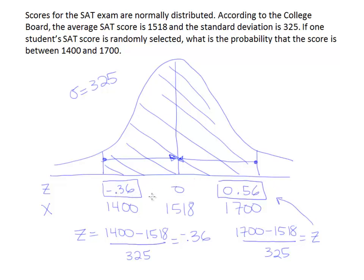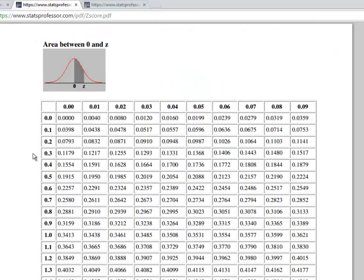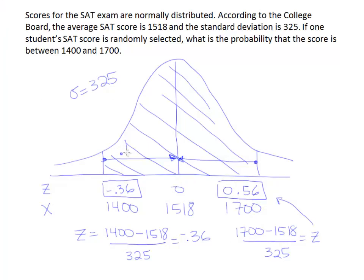So I need to look up 0.36 and 0.56 on my z-chart. We're looking up minus 0.36 first. There's no negative z-scores on the table since the curve is symmetric, so I'm going to look up 0.36. Here's 0.3, I come over and find 6 here. So I end up with 0.1406 as the area in this space.